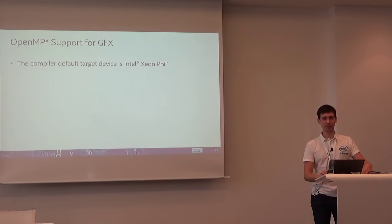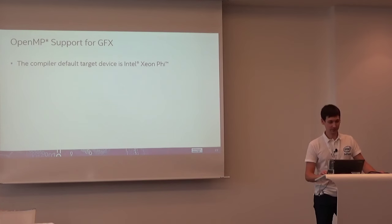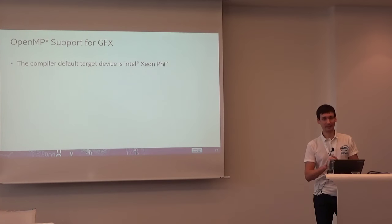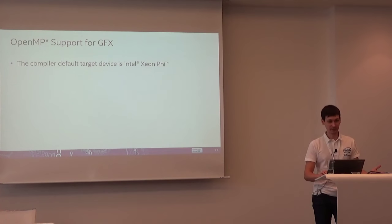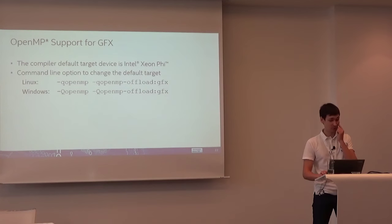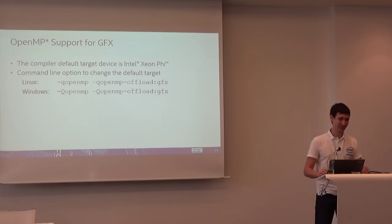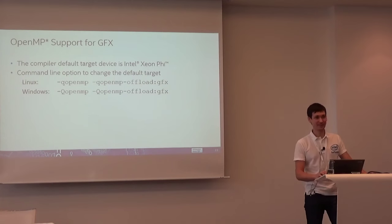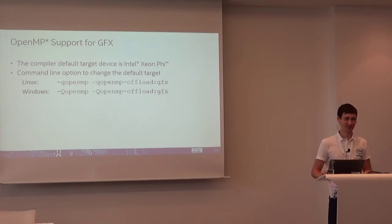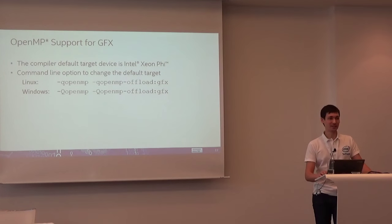An important point when using OpenMP instead of Cilk Plus is that the default target device is Intel Xeon Phi. By default, the Intel compiler's OpenMP is more focused on HPC and targets Xeon Phi. So you need to explicitly say to offload to integrated graphics instead, using the option 'openmp-offload=gfx'. Don't forget to do this — otherwise you'll write your code expecting maximum performance, run it, see no performance gain, because it's trying to offload to Xeon Phi which is not available, and you're just running the same code on the host.